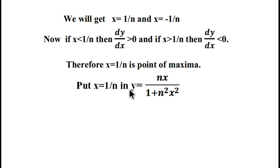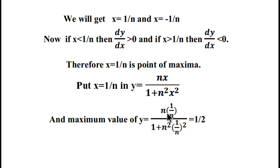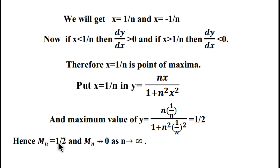Therefore x = 1/n is a point of maxima. Substituting x = 1/n into y = nx / (1 + n²x²), we get the maximum value of y equal to 1/2. Therefore M_n = 1/2, because the supremum of this collection is 1/2.